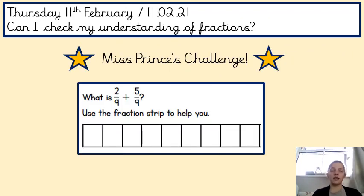Last but not least, my challenge for today says, what is 2 ninths add 5 ninths? Use the fraction strip to help you. Remember when your denominator is the same, you're just adding the numerators. So, you're just adding 2 and 5 to get your answer. It will be written over 9. So, it'll be something over 9. If you need to colour in the fraction strip to help you to get your answer, that is completely fine. Let me know what you get.